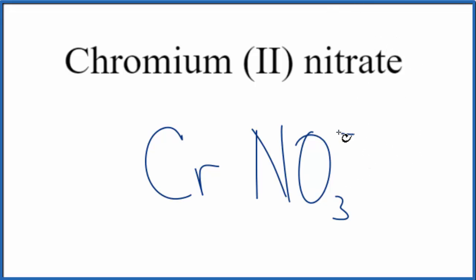We know that the nitrate has a 1 minus ionic charge. The chromium, it says right here, 2. Since it's a transition metal, they tell us the charge 2 plus.